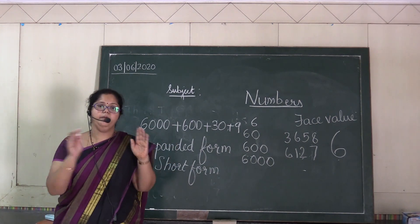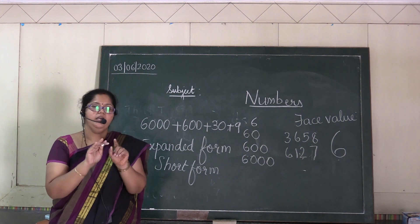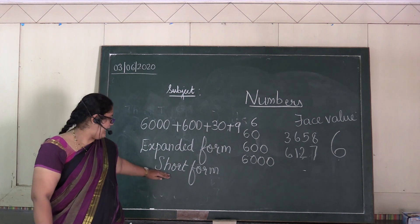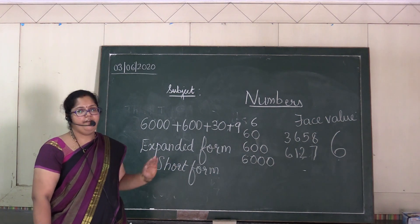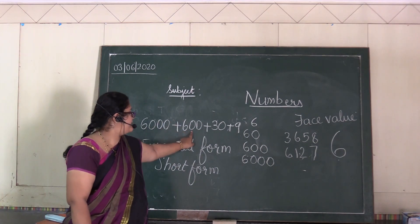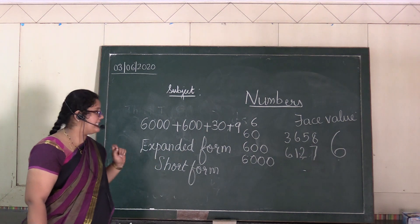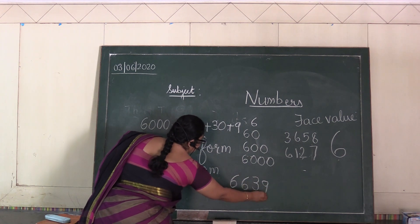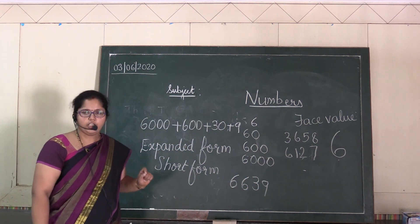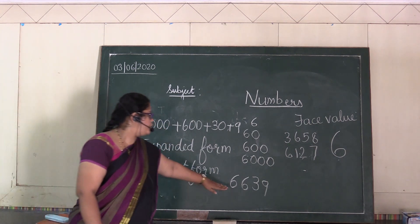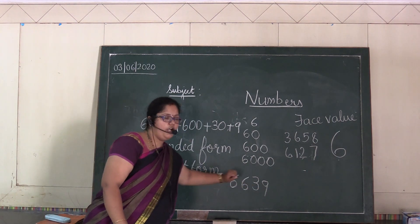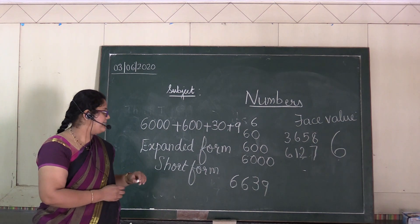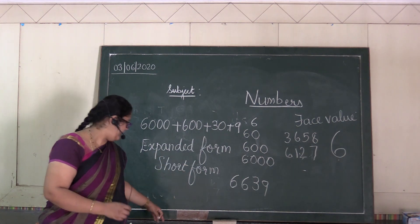You are expanding the number by writing the place values together with a plus sign in between. The short form is where you write only the face value. So six thousand plus six hundred plus thirty plus nine is the expanded form, and the short form will be six thousand six hundred thirty-nine — six, six, three, nine — or 6,639.